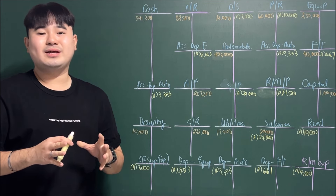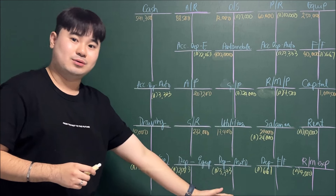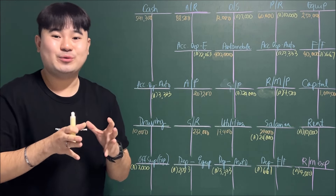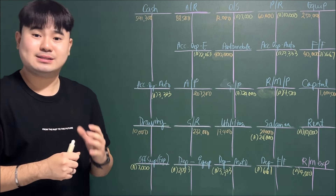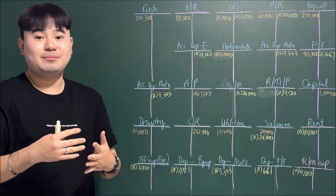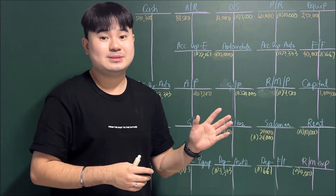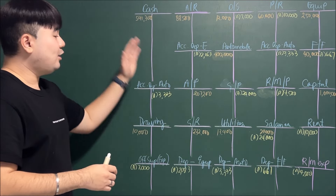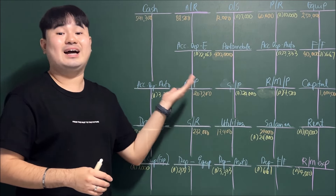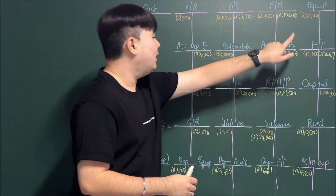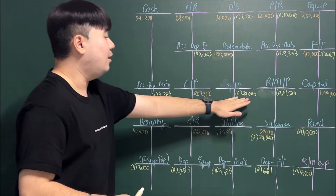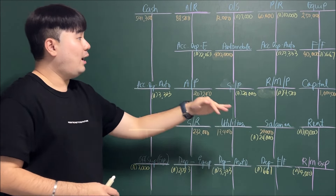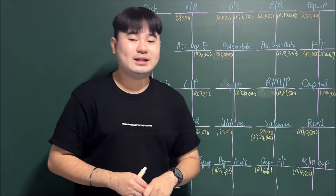Now we update the ledger accounts with our adjustments. Remember: adjusting entries must also be journalized and posted to T-accounts. The adjusting entries marked 'A' have now been posted to all T-accounts so that all accounts show their adjusted balances. Now we proceed to closing entries.